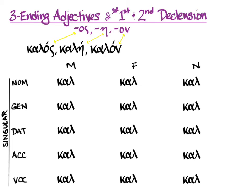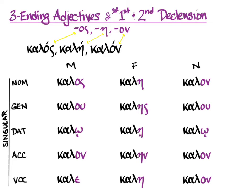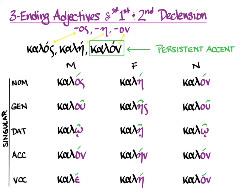Here I've put kalos in all of the genders and all of the cases for the singular. The masculine, feminine, and neuter follow your familiar second, first, and second declension endings. It's persistent accent, and you figure out where to keep the accent for an adjective by looking at the neuter nominative singular. So in this case, kalon wants to keep an acute on the last syllable. As usual, if it's a persistent acute on the ultima in the nominative, it becomes a circumflex in the genitive and dative before switching back to an acute in the accusative and the vocative.